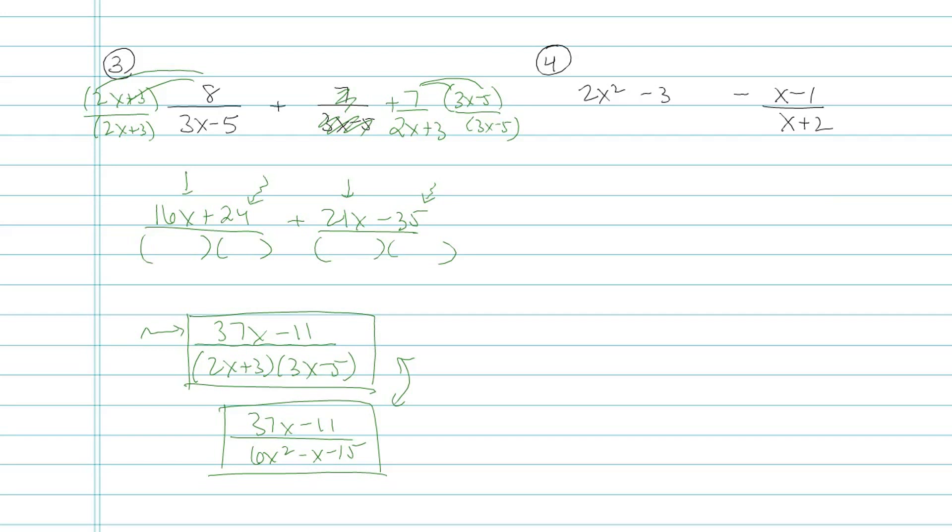The first two terms aren't even fractions. Like, what am I supposed to do with that? Well, in order to turn them into fractions, they're going to have to have the denominator x plus 2. So I have to multiply these first two terms by x plus 2 over x plus 2.